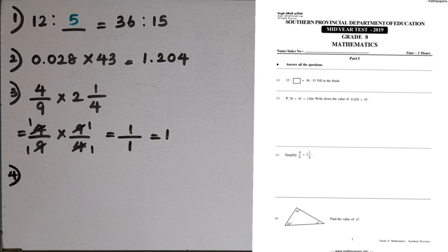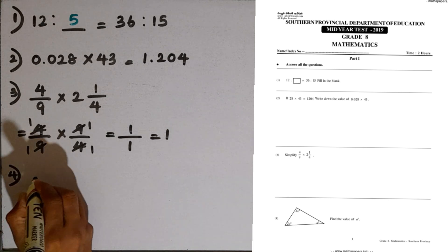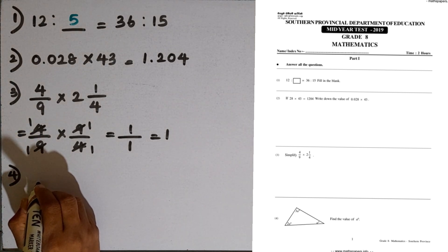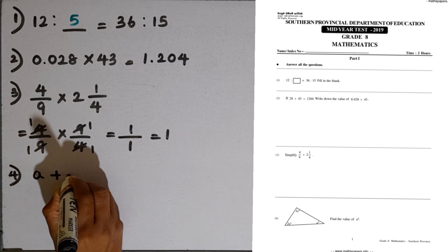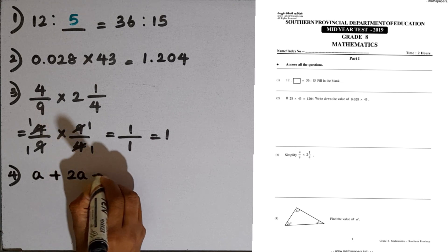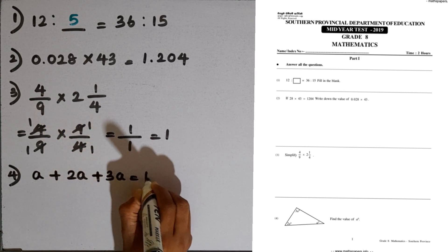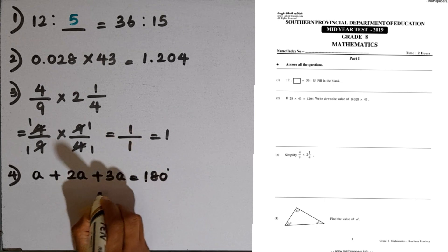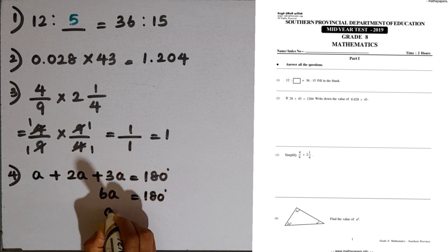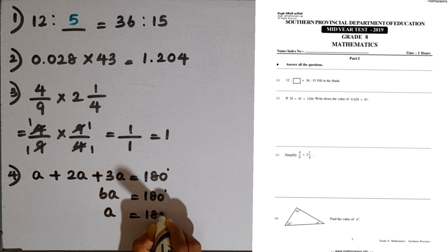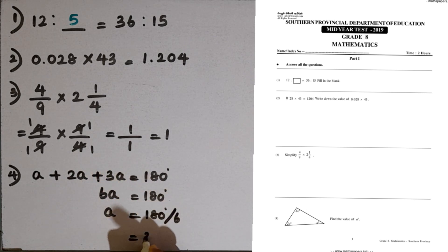Question number 4: we are given a triangle with interior angles A, 2A, and 3A. Find the value of A. We know that the interior angle sum of a triangle is 180 degrees. So we write the equation: A plus 2A plus 3A equals 180 degrees. Then 6A equals 180 degrees, so A equals 180 divided by 6, which is 30 degrees.